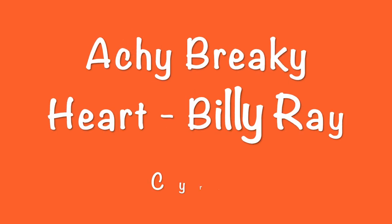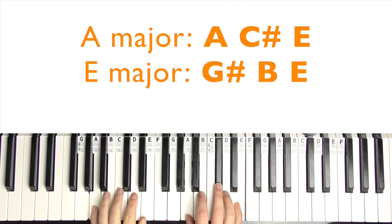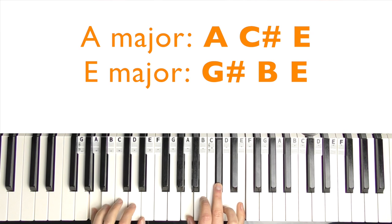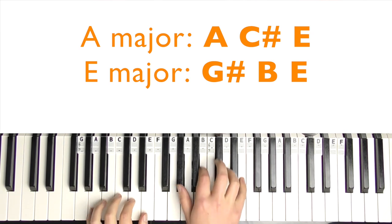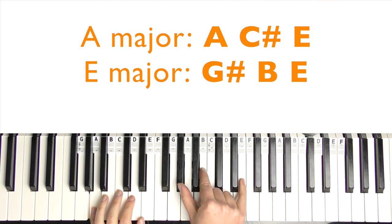So the next song is Achy Breaky Heart by Billy Ray Cyrus. So the only chords we need is A major. So A, then A, C sharp, and E. The next chord we need is E major. So I'm going to play the easiest way to get to E major from A is first inversion. So it's G sharp, B, and E as well. And then you play E in the left hand.